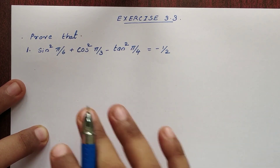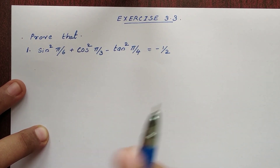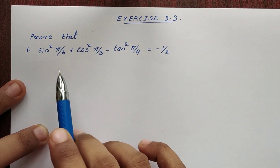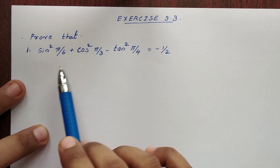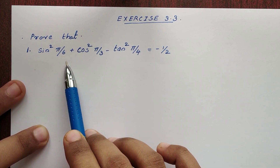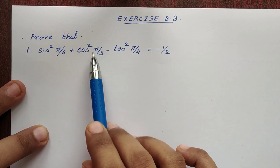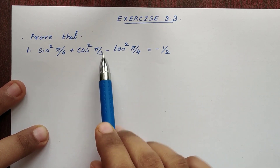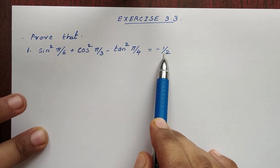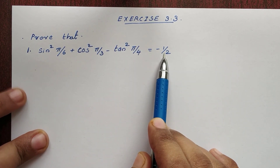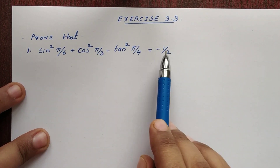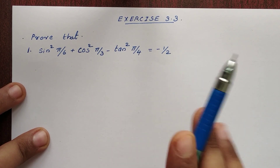Hi everyone, this is the exercise of 3.3LM problem. First question: prove that sin²(π/6) + cos²(π/3) - tan²(π/4) is equal to minus 1 by 2. Okay, let's prove LHS is equal to RHS.